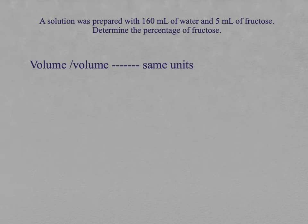Let's do the first example together. A solution was prepared with one hundred and sixty milliliters of water and five milliliters of fructose. Determine the percentage of fructose. Let's analyze the problem together. First of all, we need to know that this solution has been prepared with this amount of water and this amount of fructose. As you can read, this one is the solvent and the other one is the solute.